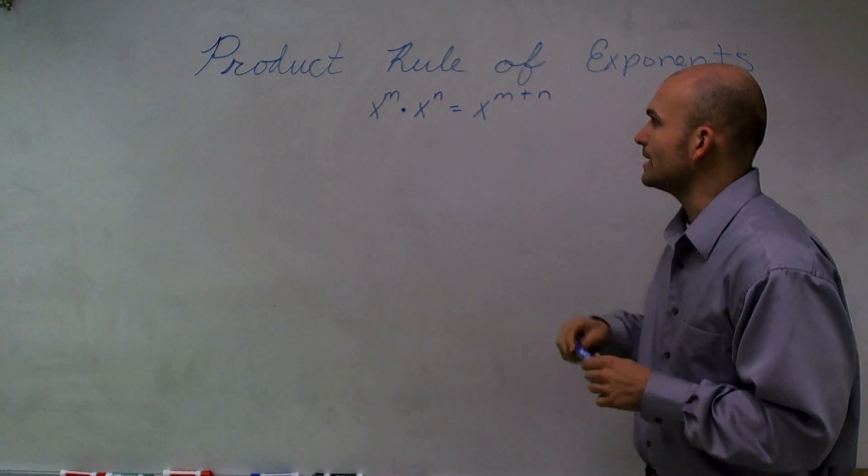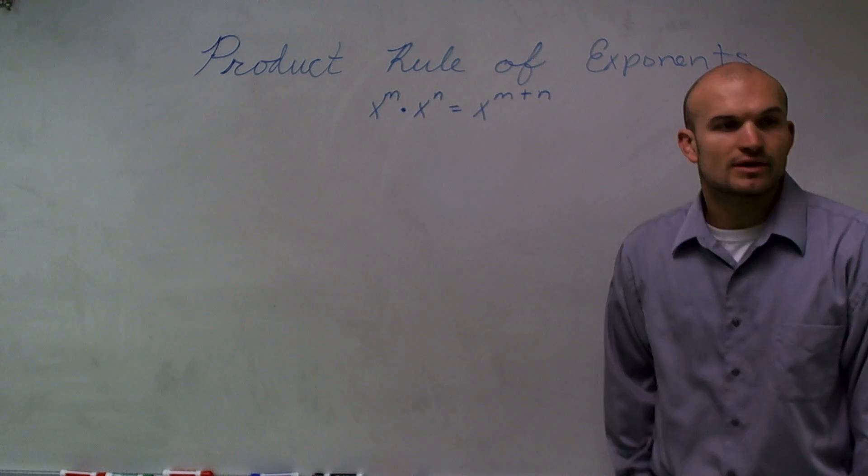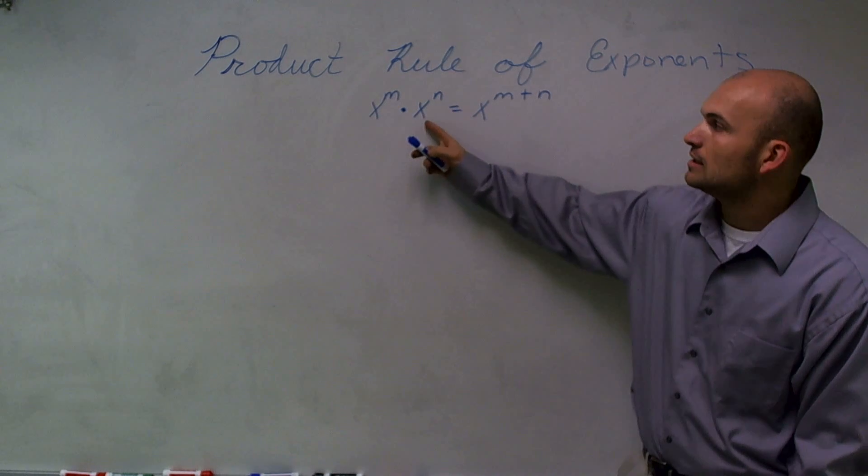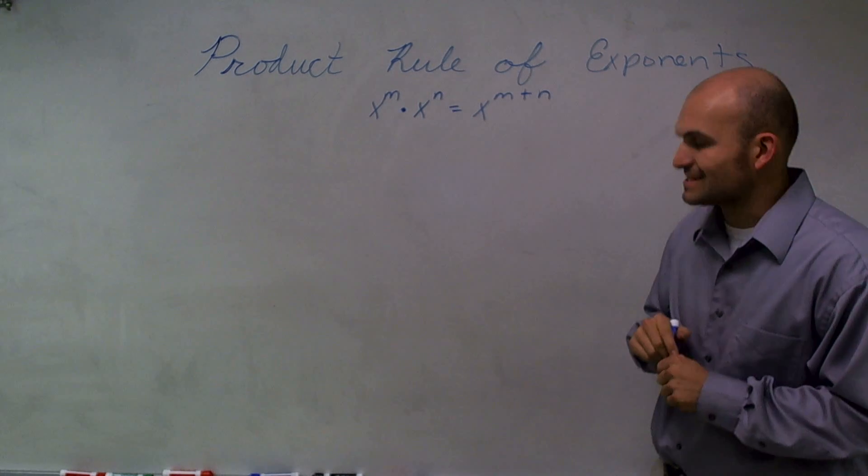So if we look at, I wrote down the product rule of exponents, which is x, any real number, raised to the integer m, times x raised to a different integer n is going to equal x to the m plus n.